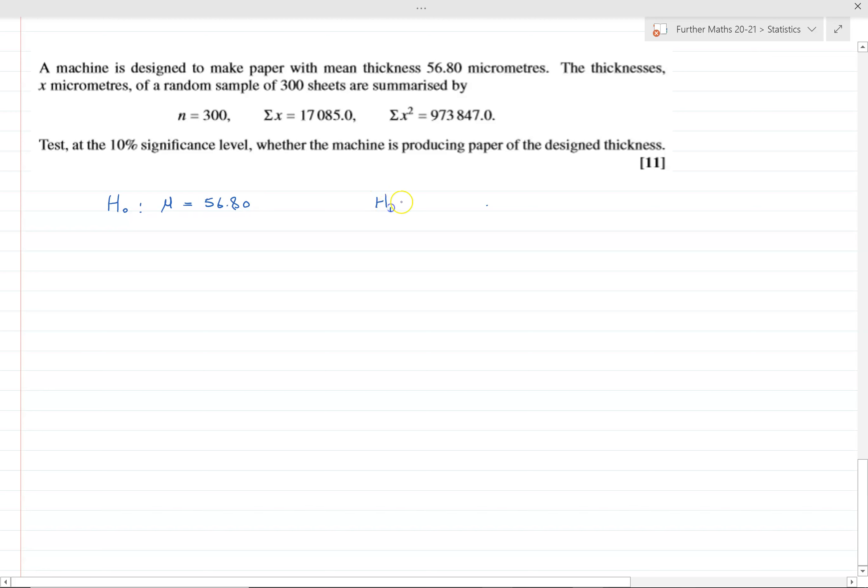Our alternative hypothesis is that it's not that. There's no indication of a decrease or increase, so we go for a two-tailed test. We need a two-tailed test because we're not testing whether it's increased or decreased.